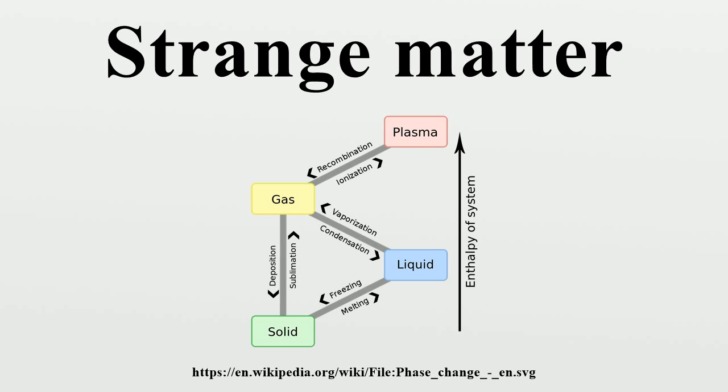The idea that this could happen is the strange matter hypothesis of Bodmer and Witten. In this definition, the critical pressure is zero. The nuclei that we see in the matter around us, which are droplets of nuclear matter, are actually metastable, and given enough time would decay into droplets of strange matter, that is, strange lets.